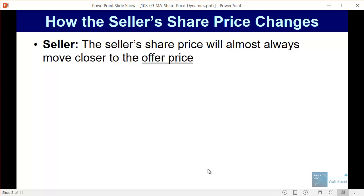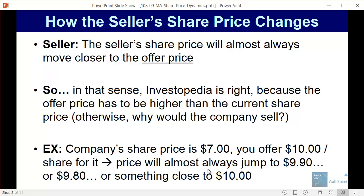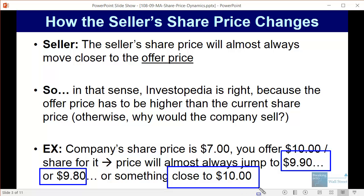The seller's share price will almost always move closer to the offer price — that part of Investopedia's claim is correct, because the offer price has to be higher than the current share price. So if a company's current share price is $7 and you offer $10 per share, the price will almost always jump up to around $9.90 or $9.80. It never goes to exactly $10 because traders are betting the deal might not close, but in general the seller's share price goes up closer to $10 from $7.